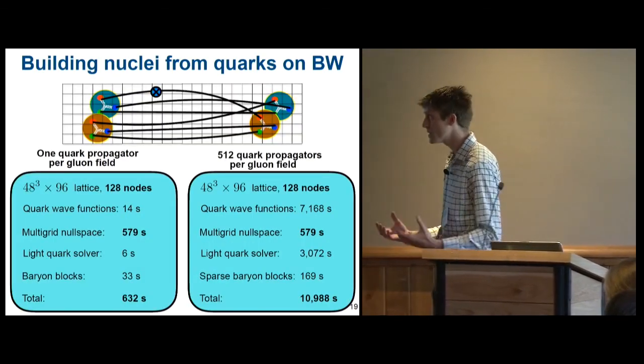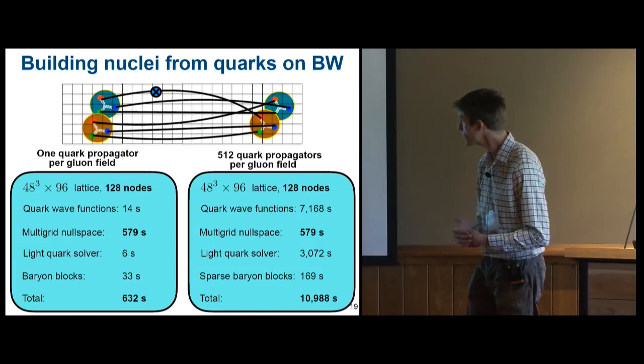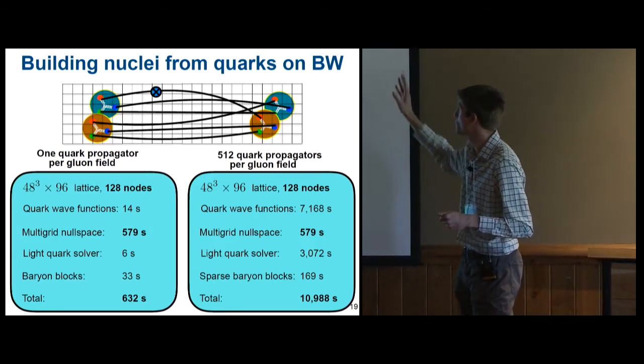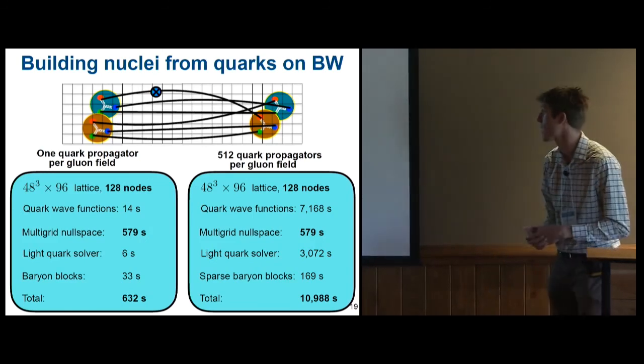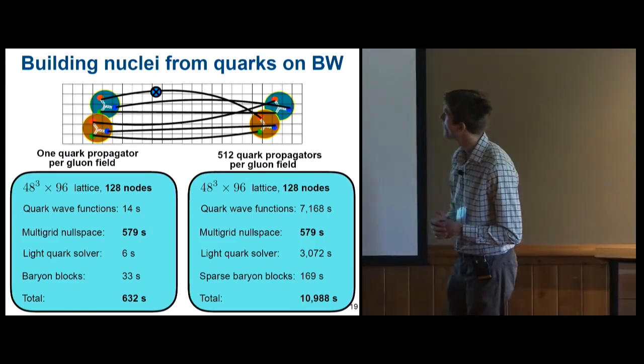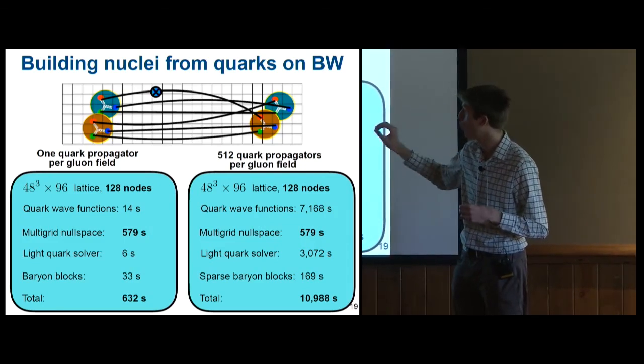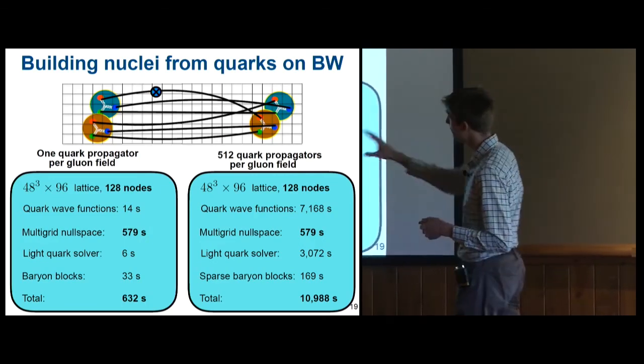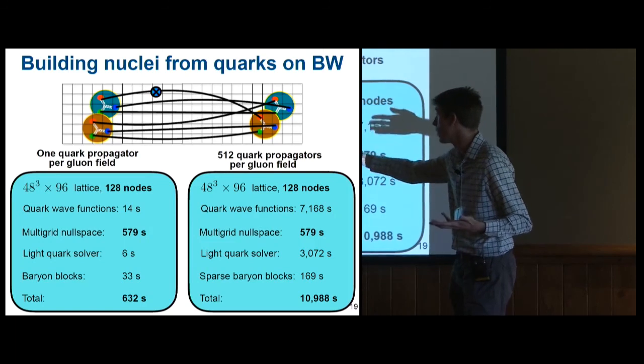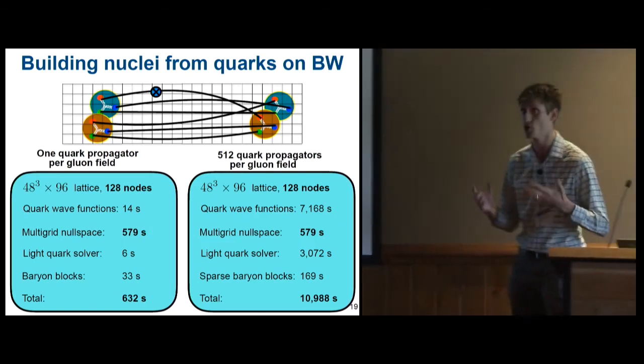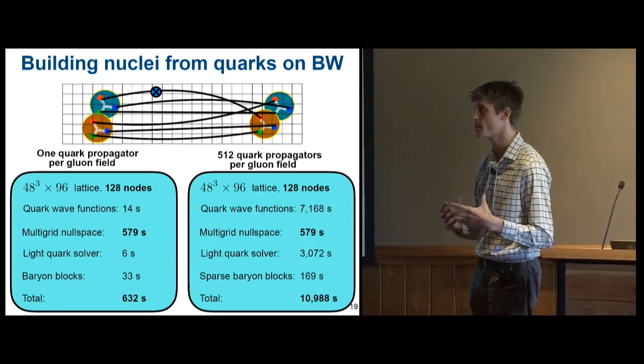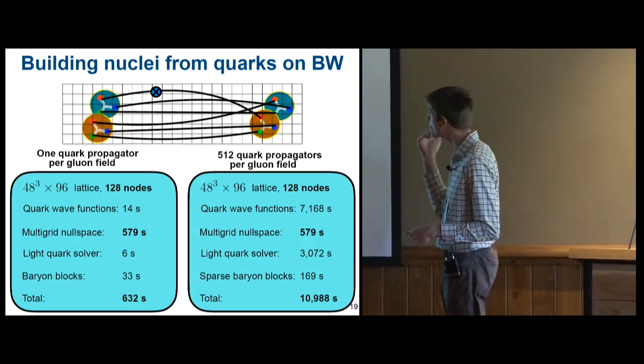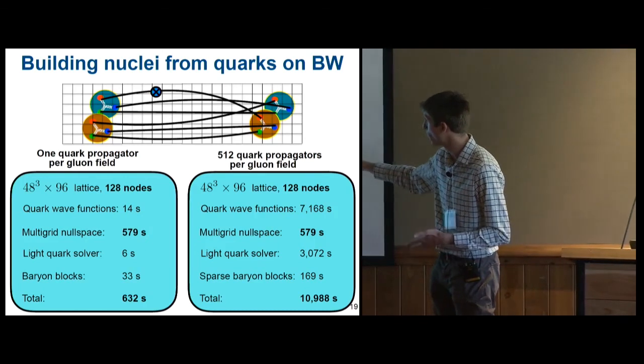Finally, once we have our lattices, we need to actually build nuclei on them. And here, there's a few steps of creating your quark sources, and then creating again these propagators by solving this Dirac equation. And here, the thing to notice is that if you're just computing one quark propagator per gluon field, we're in trouble. Because even with multigrid, setting up the multigrid solver takes close to 100% of the time to do that calculation. But you can use the same multigrid null space for every propagator that you calculate on this gluon field. And so if we calculate 500 of them, then multigrid null space setup becomes a small fraction of the cost.